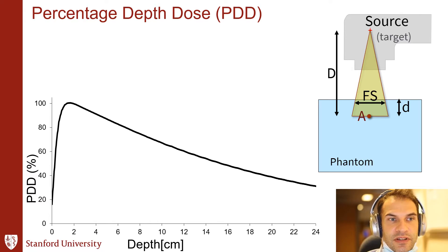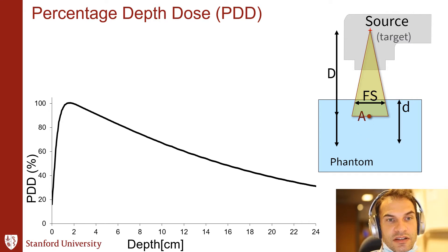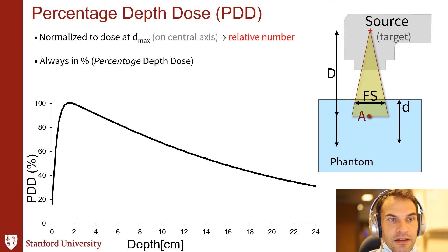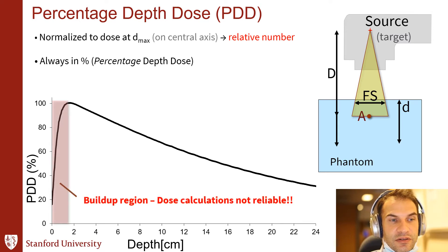The percent depth dose describes how the radiation behaves as a function of depth — when you have a detector in a water tank underneath a megavoltage radiation beam. We increase the depth of that detector by keeping a constant SSD, increasing both the depth and the distance from the source to our point of interest, by keeping the surface of the water tank at the same distance from the radiation source. These curves typically normalize to D-max. D-max is the depth of maximum dose and it's 100% on the PDD curve, always expressed in percent.